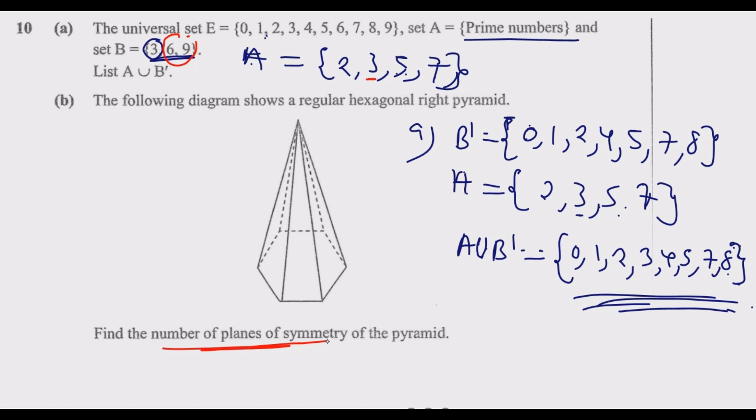When you are given a regular polygon with n number of sides, so the number of sides is n. In this case n is equal to 6 because it's a hexagon. So a regular polygon with n number of sides will have n planes of symmetry.